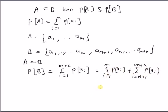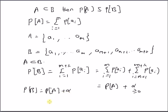This first summation is equal to the probability of event A, and the second value is always going to be non-negative, that is always greater than or equal to 0. So, the probability of event B is equal to the probability of event A plus a non-negative value. Therefore, the probability of event A should always be less than or equal to the probability of event B, since P(B) is always a sum of P(A) plus a non-negative value. This means P(A) is always less than or equal to P(B) if A is a subset of B.